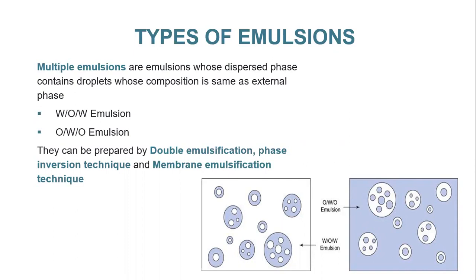Multiple emulsions can be used for controlled drug release, drug targeting, taste masking, immobilization of enzymes, and to increase the absorption of drugs from the GIT. These emulsions can be prepared by double emulsification technique, phase inversion technique, and membrane emulsification technique.